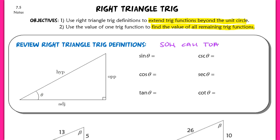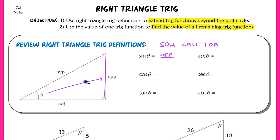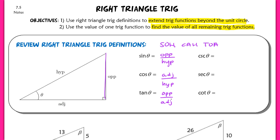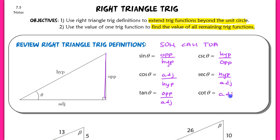You guys used the mnemonic SOHCAHTOA. This is basically an acute angle in a right triangle. The sine of theta is equal to the opposite side — it's the ratio of the opposite over your hypotenuse. The cosine is the adjacent side over the hypotenuse. And the tangent would be the opposite over your adjacent. The cosecant of theta would be your hypotenuse over your opposite, which is just the reciprocal function of sine. The secant of theta is hypotenuse over adjacent. And the cotangent of theta is defined as the adjacent over the opposite.